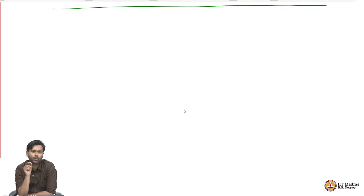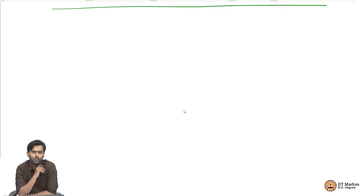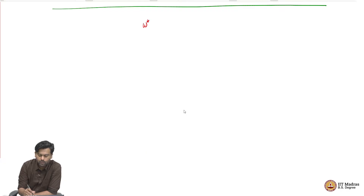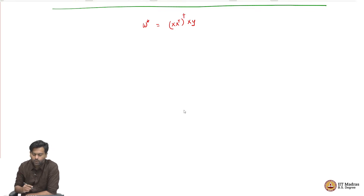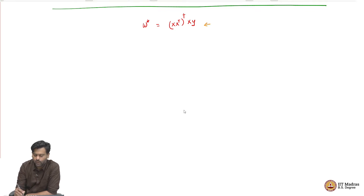The first question about linear regression we want to ask is: what does the solution mean geometrically? We saw that the linear regression problem solution W* is (X X^T)^{-1} X Y — using the pseudo-inverse. But what does it mean? How can we interpret this geometrically?